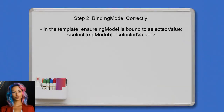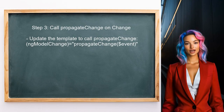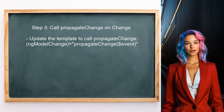Next, ensure that the ngModel directive is correctly bound to the selected value property in the template — this allows Angular to track the value of the select element. You should also make sure that the propagate change function is called whenever the ngModel changes. This is crucial for notifying Angular about changes in the select element's value.